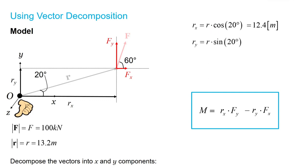Similarly, Ry is going to be R, the magnitude of R, which is 13.2 meters times sine of 20 degrees, which will give us 4.51 meters.